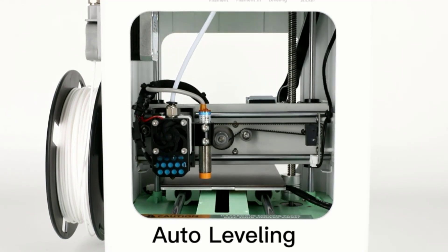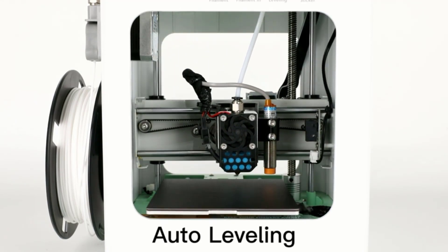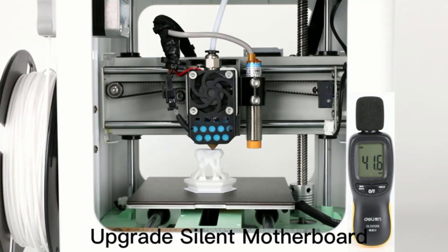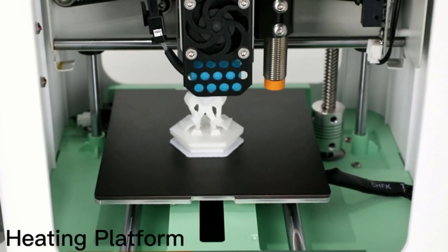All you have to do after unboxing is remove a couple of small clips that secure the print bed for transit, fit the magnetic bed, insert the SD card and plug in the power adapter.